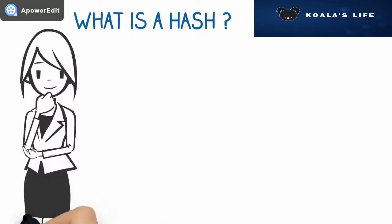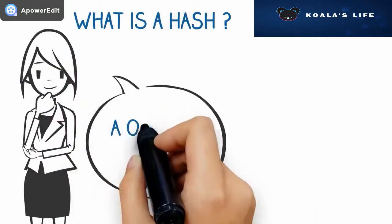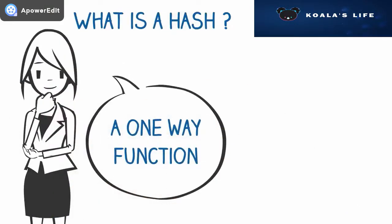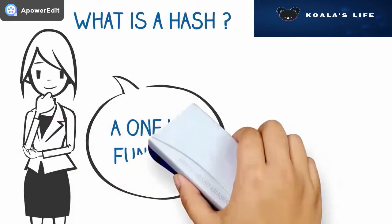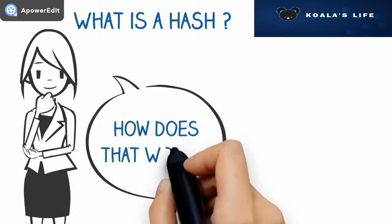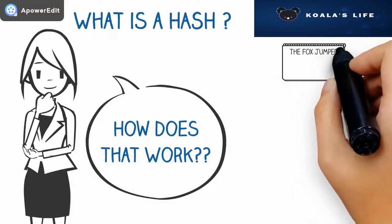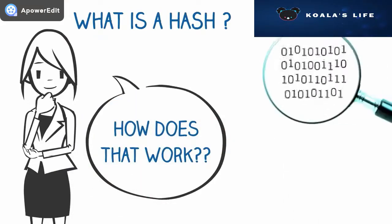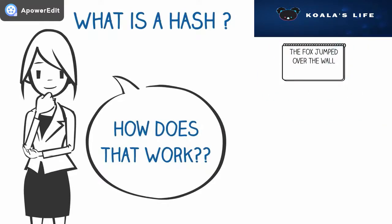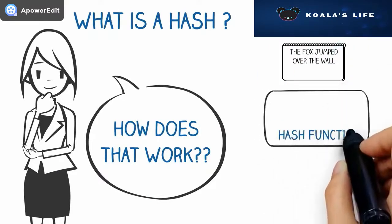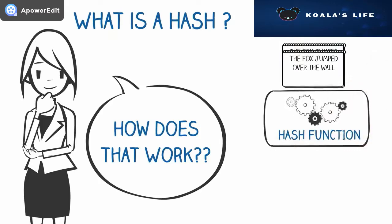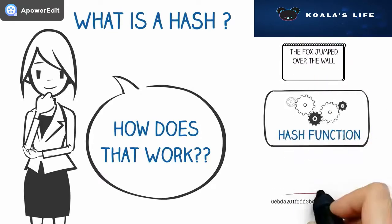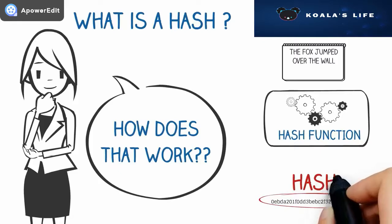A hash is a one-way function that has multiple uses in blockchain and decentralised systems. All digital media, like documents, movies or music, are strings of binary digits, ones and zeros. A hash function takes any digital media and runs an algorithm on it to produce a fixed-length and unique digital output known as a hash.